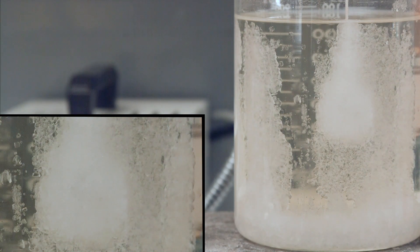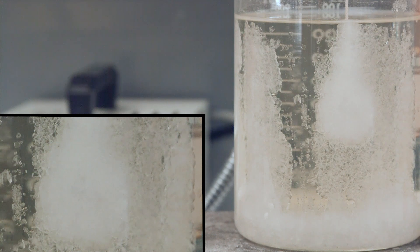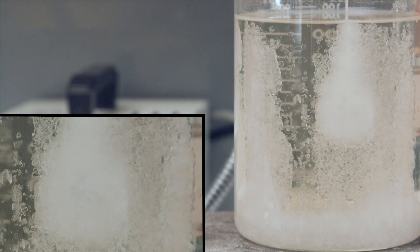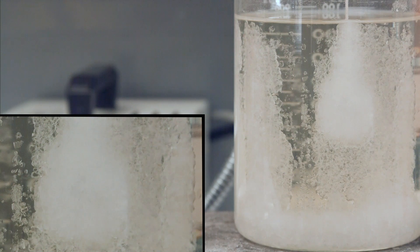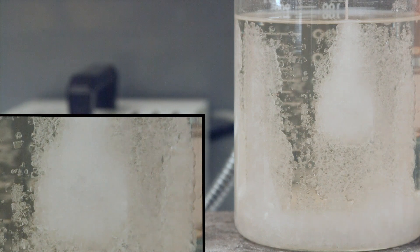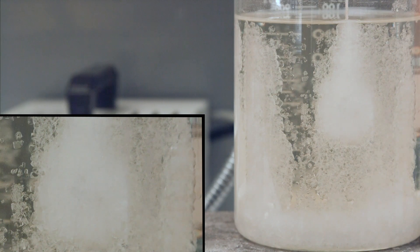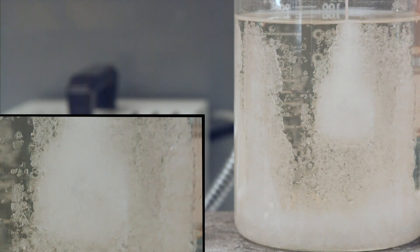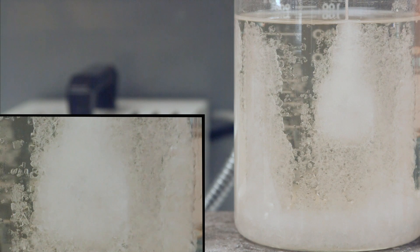Now, in my lab, we use this exact same technique to grow many other types of materials. But in that case, instead of using water as a solution, we actually use other materials that have much higher melting temperatures, like some metals. For example, indium, aluminum, tin, all of these types of things make nice solutions or fluxes in which we can grow nice crystalline materials.